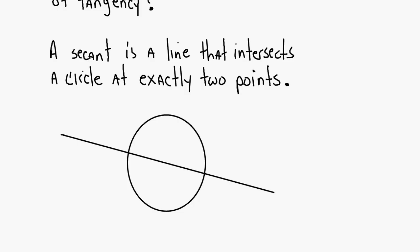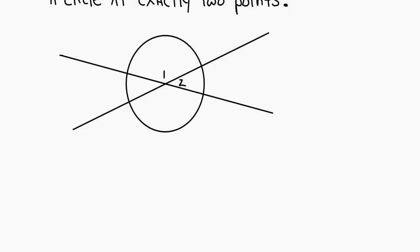Draw a line through a circle and then draw another line through the circle and make sure they intersect inside the circle. So you've got two secants that intersect inside a circle. They form four angles. Angles one and three are congruent — they're vertical angles. So are angles two and four.